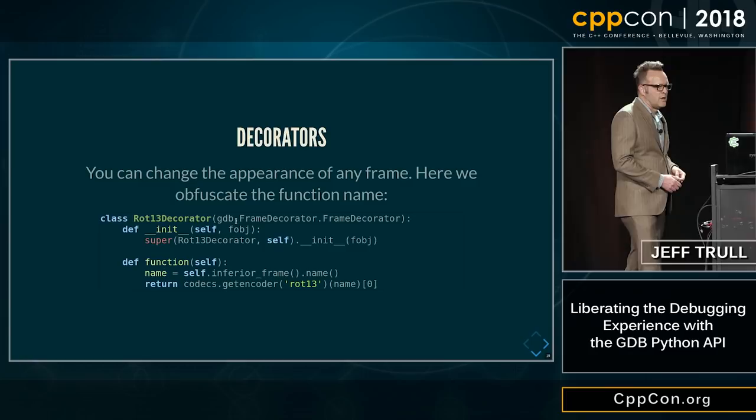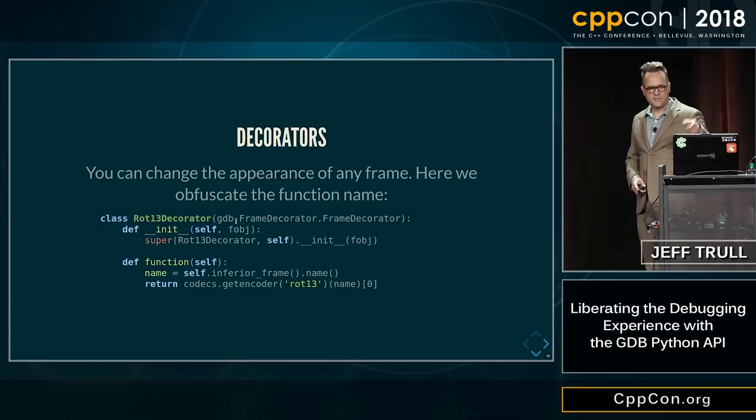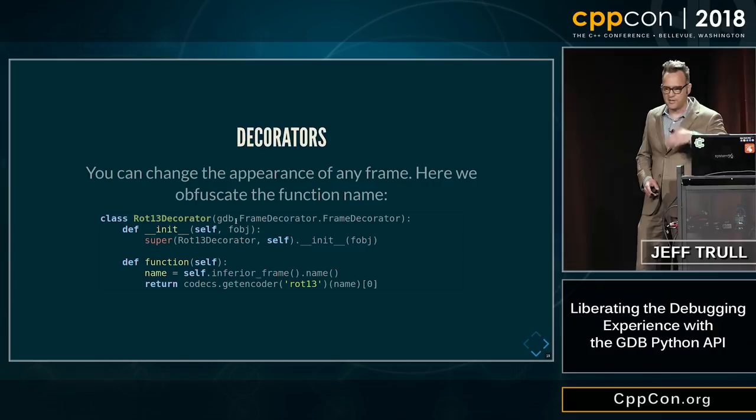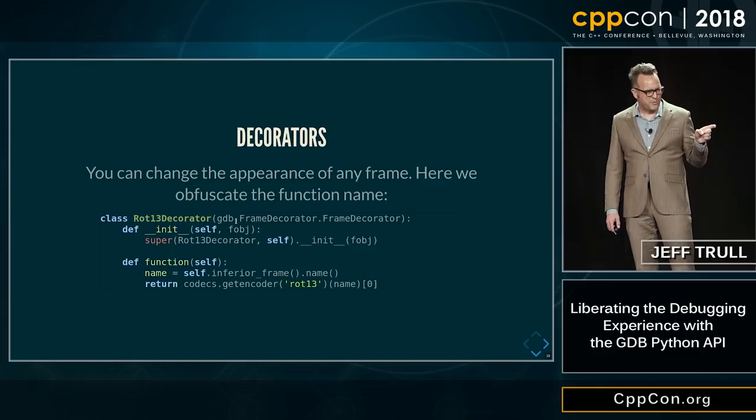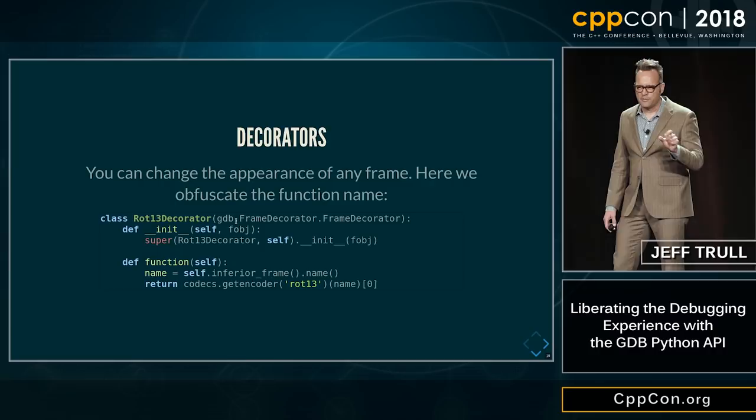First of all, decorators. You can change the appearance of any frame. In this case, we are making a decorator that inherits from gdb.FrameDecorator — this is that pattern I described earlier — and we're overriding a member function, in this case the one that prints the name of the function. This particular decorator transforms the original name of the function by running rot13 on it. So this is a good trick to play on your coworkers.